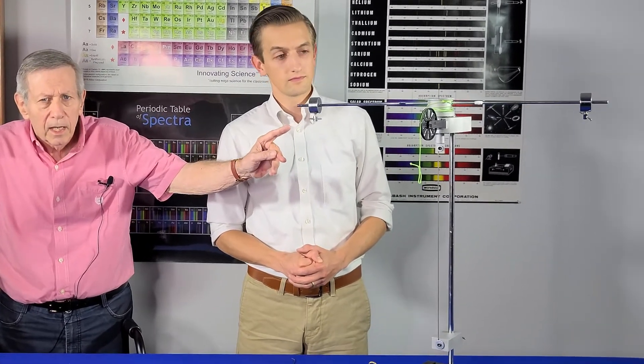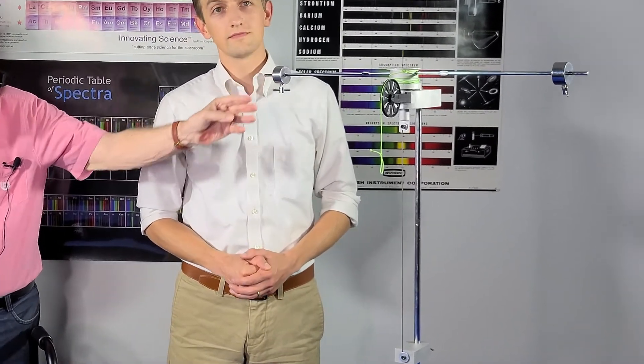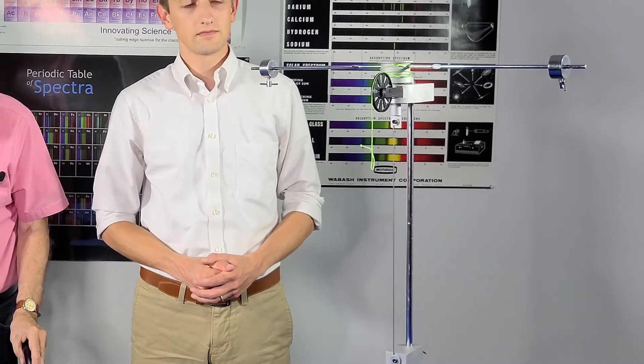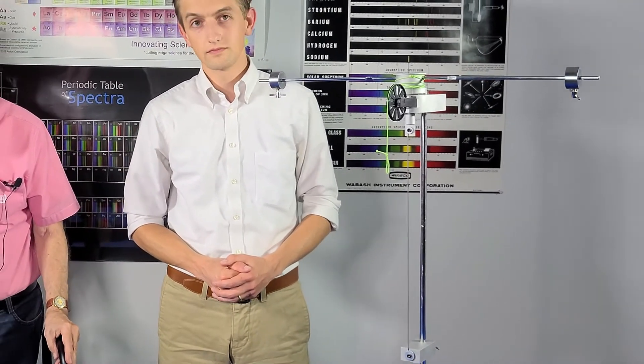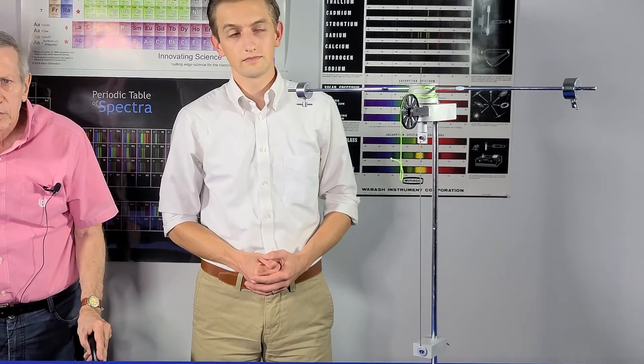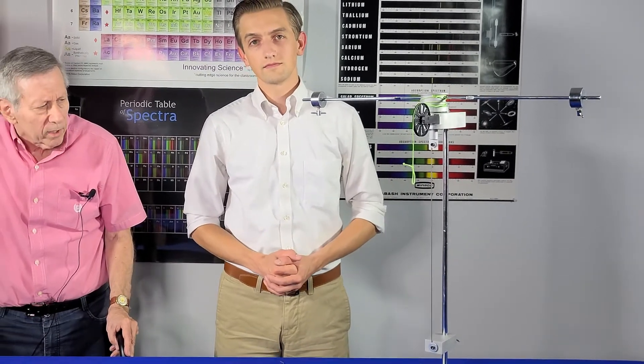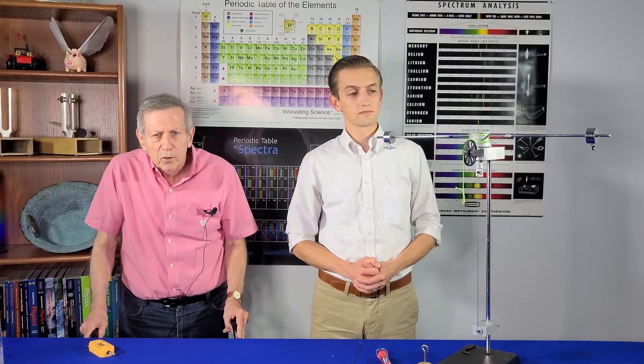The spring produces a torque which attempts to restore the pendulum to equilibrium following Hooke's law. The torque is proportional to the angular displacement. To measure this constant K we need to measure the torque and its displacement.